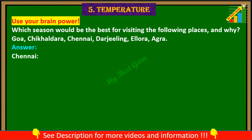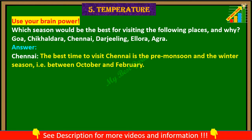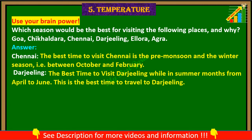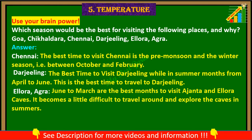Chennai — The best time to visit Chennai is the pre-monsoon and the winter season, like between October and February. Darjeeling — The best time to visit Darjeeling is during the summer months from April to June. Elora and Agra — June to March are the best months to visit Ajanta and Elora caves. It becomes a little difficult to travel around and explore the caves in summer.